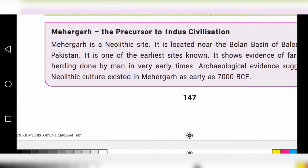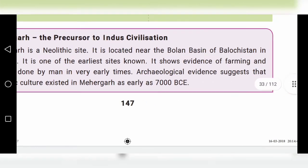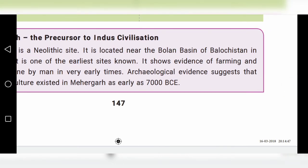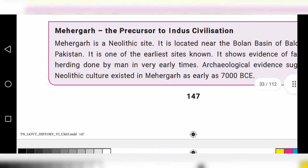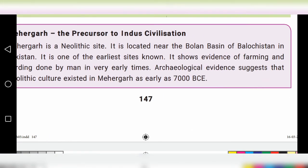Mehrgarh: The Precursor of Indus Civilization. Mehrgarh is a Neolithic site located near the Bolan Basin of Balochistan in Pakistan. It is one of the earliest known city sites and shows evidence of farming and herding in very early times. Archaeological evidence suggests that Neolithic culture existed in Mehrgarh as early as 7000 BCE.